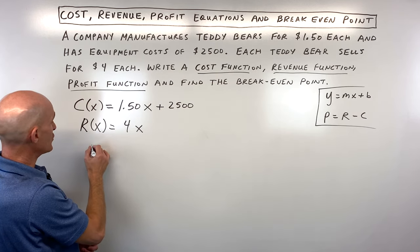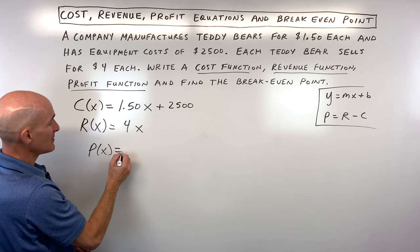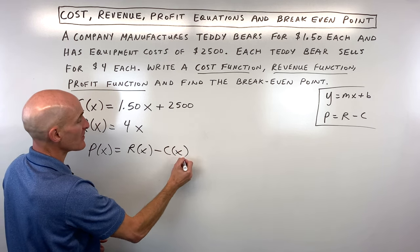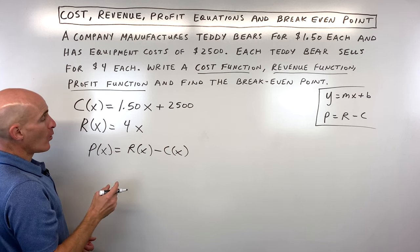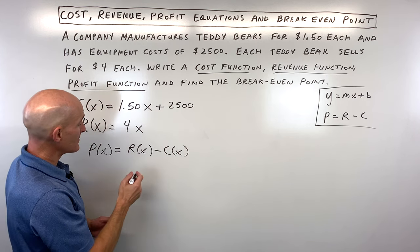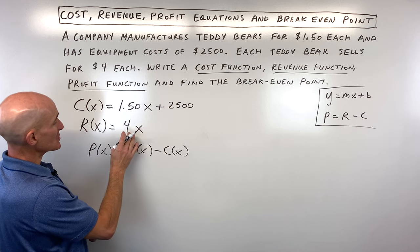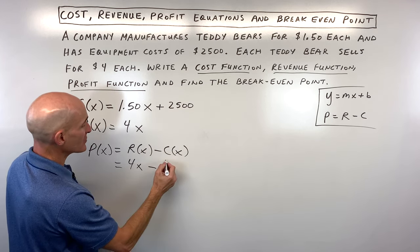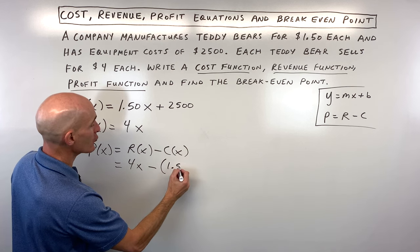And then our profit is the difference. So we're going to say P of X is equal to R of X, our revenue, minus our expenses or our costs. Now, one mistake that students sometimes make is they forget to use parentheses. So our revenue is 4X. Our cost is this whole thing. So let's put it in parentheses. Let's treat it like a group.